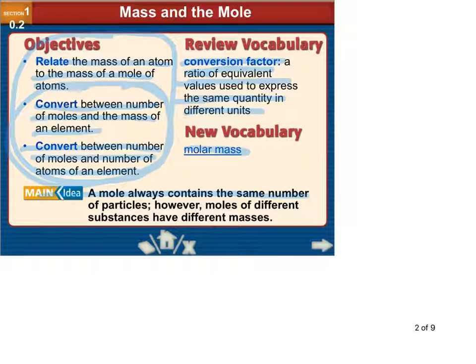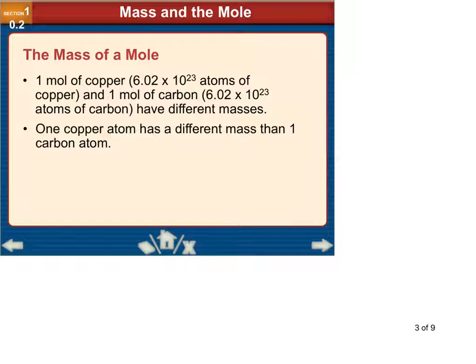Our main idea, a mole always contains the same number of particles, however moles of different substances contain different masses. Moles of copper and a mole of carbon have different masses. They have the same number of atoms, illustrated here, but different masses, because one copper atom has a different mass than one carbon atom.